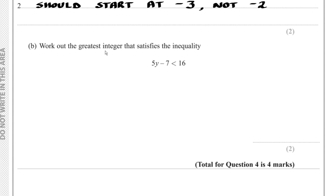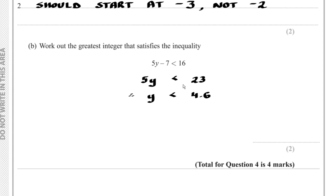Part B: Work out the greatest integer that satisfies the inequality 5y - 7 < 16. Adding 7 to both sides gives 5y < 23. Dividing both sides by 5 gives y < 4.6. So the greatest integer that satisfies this inequality is 4, because y < 4.6 and the closest integer that satisfies this is 4.